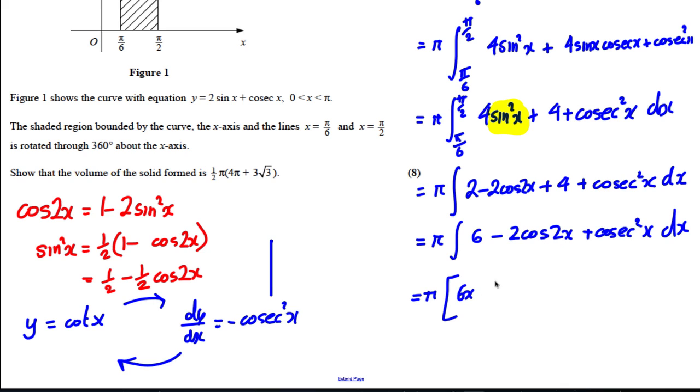So I can integrate everything here. This is pi, 6 integrates to 6x, this here integrates to negative sine 2x, and this here will integrate to negative cot of single x, all of this between pi by 6 and pi over 2.